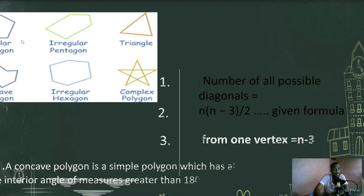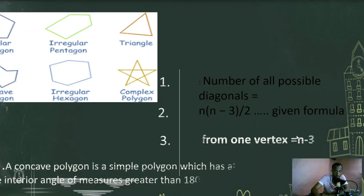Let's find the number of all possible diagonals for a pentagon. Pentagon has five sides. So: 5 times (5 minus 3) over 2 — five minus three is two, then five times two is ten, ten over two is five. So a pentagon has five possible diagonals. From each vertex, you will use the formula n minus 3. That's how you find it.